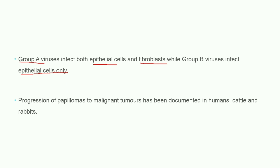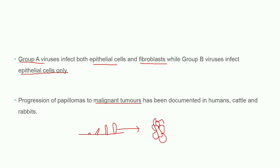Progression of papillomas to malignant tumors has been documented in humans, cattle, and rabbits. Sometimes these papillomas or warts can convert into tumors — unwanted growth of cells. This malignant tumor formation generally occurs only in humans, cattle, and rabbits; in other species it does not generally occur.